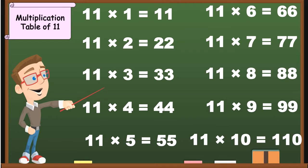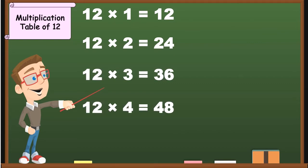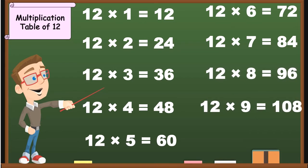12 1's are 12, 12 2's are 24, 12 3's are 36, 12 4's are 48, 12 5's are 60, 12 6's are 72, 12 7's are 84, 12 8's are 96, 12 9's are 108, 12 10's are 120.